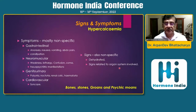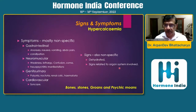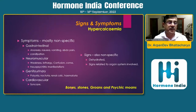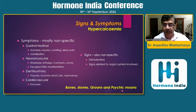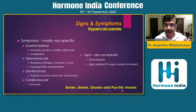Don't forget the classic mnemonic — over 100 years old: bones, stones, groans, and psychic moods. It explains bone-related problems, kidney stone-related problems, abdominal colic-related problems, depression, and psychiatric manifestations. Bones, stones, groans, and psychic moods — it was there in our previous textbooks.